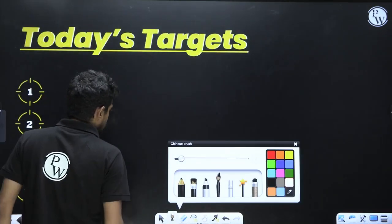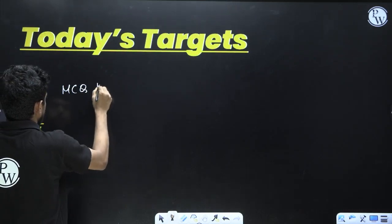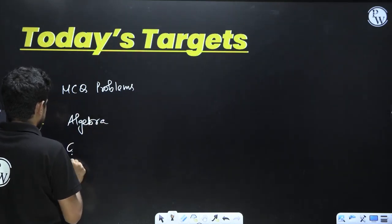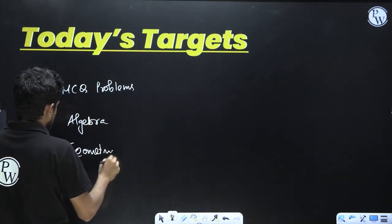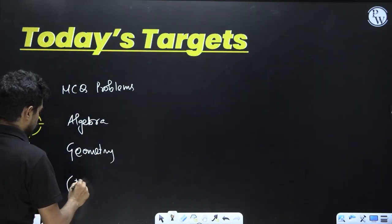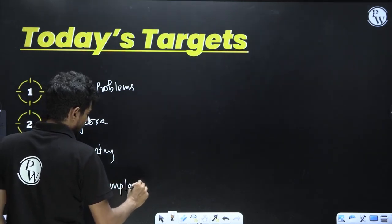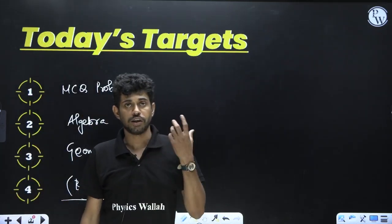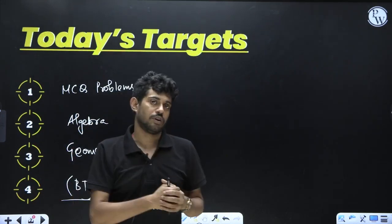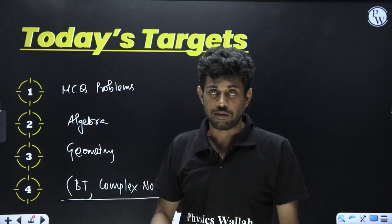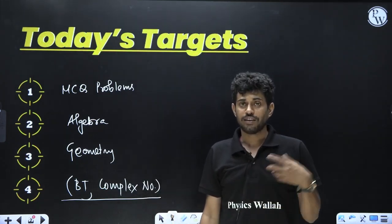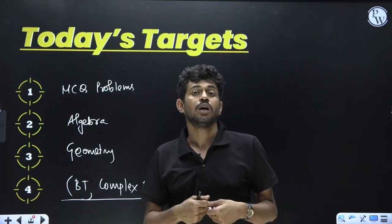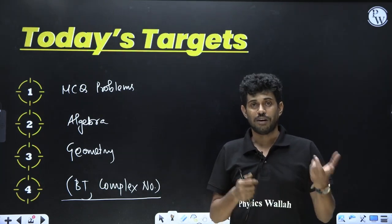Our today's target will be some MCQ problems. The topics will be mainly algebra, geometry, and involving some binomial theorem or complex numbers — miscellaneous type. Remember: in ISI you will get mostly questions depending on core concepts of mathematics, not very application-oriented problems like JEE Mains. But if you look at the Advanced paper you might see questions depending on core concepts like calculus or functions.